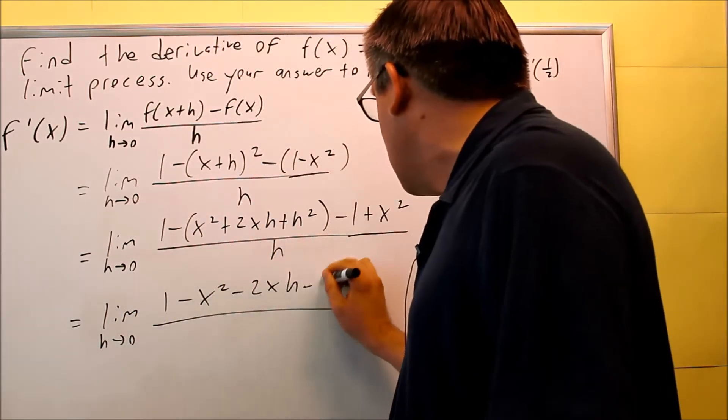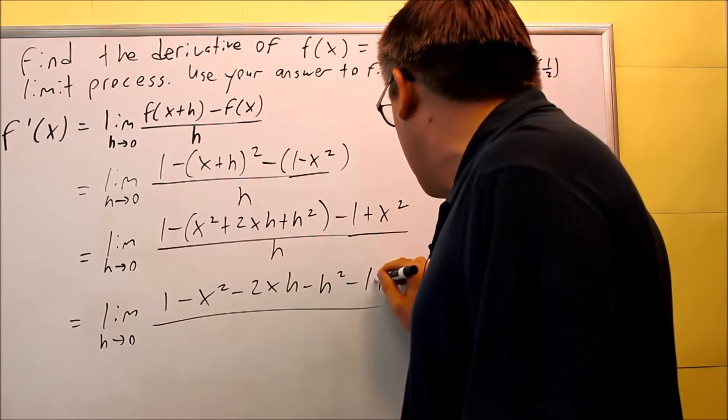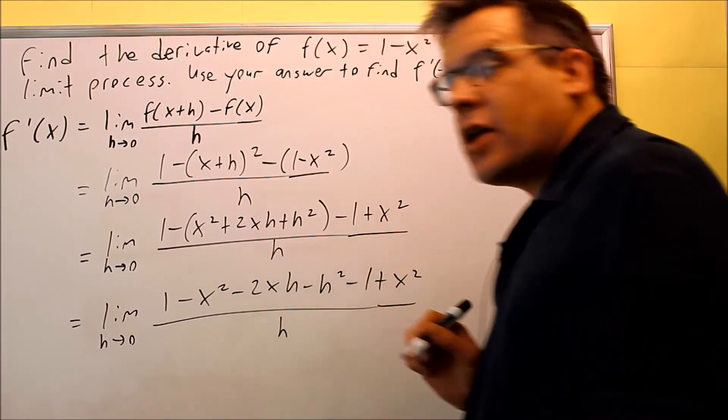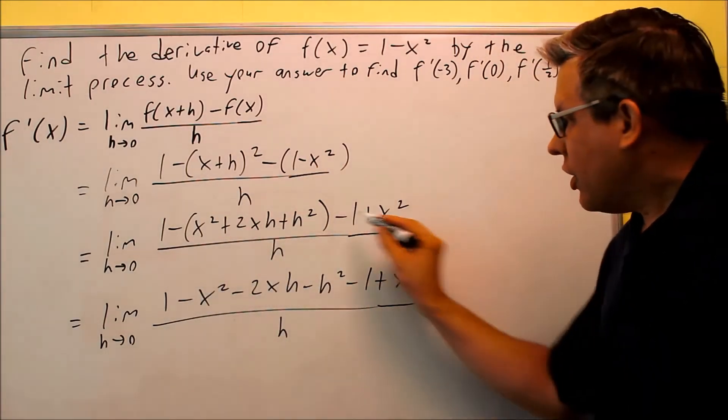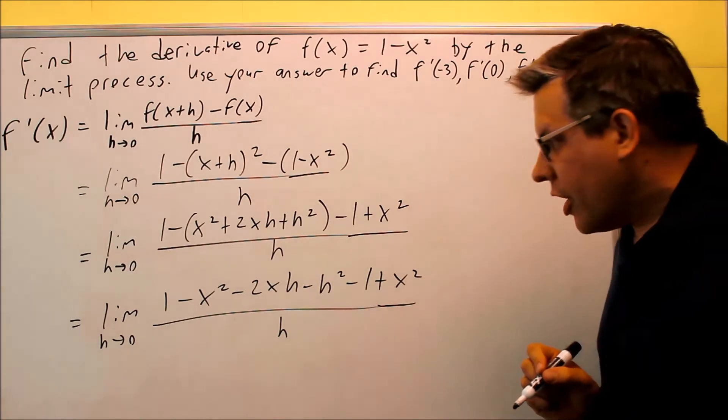minus h squared, minus 1 plus x squared. The place I see most people making the mistake on this is not distributing a minus sign correctly either here or here. So you just got to be careful when you're doing that.